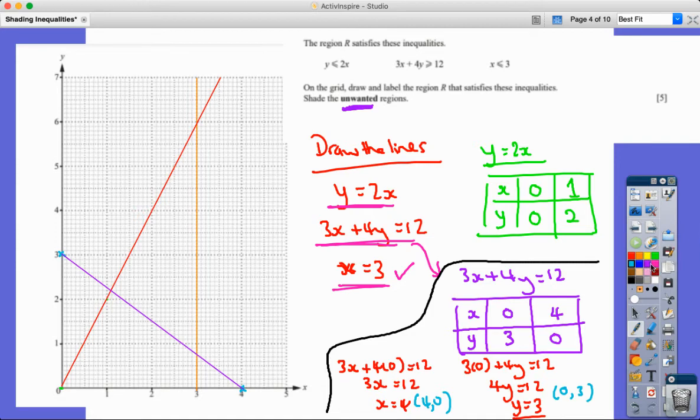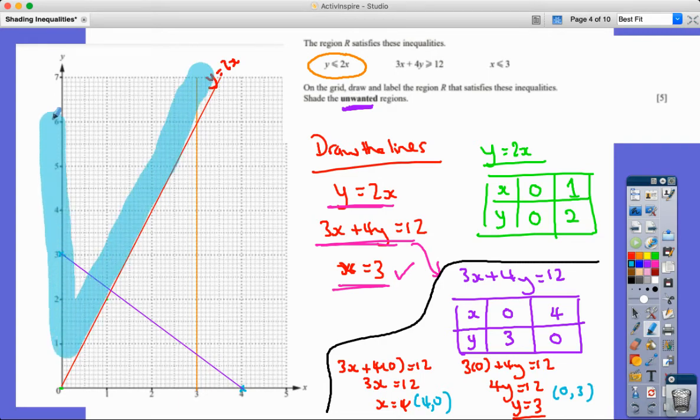Now the next thing then is we're going to analyze whereabouts this region R is by shading the unwanted regions. So the wanted region, now that I've got the boundary lines - I've got y equals 2x here. It's less than or equal to, so it's a bold line, and it's less than 2x. That means I want the area underneath, because all this area is less than and the area above it is more than. So if I want the area less than, I'm going to shade the unwanted region. I'm going to shade out the stuff I don't want. So in this case, it's this out here. I only want less than that. All that gets shaded out.